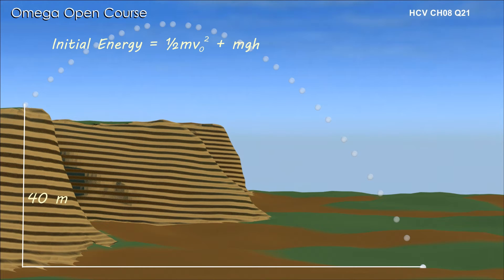When the projectile lands on the ground its height is zero and hence it does not have any gravitational potential energy. If its speed is v, then its kinetic energy is half mv square.